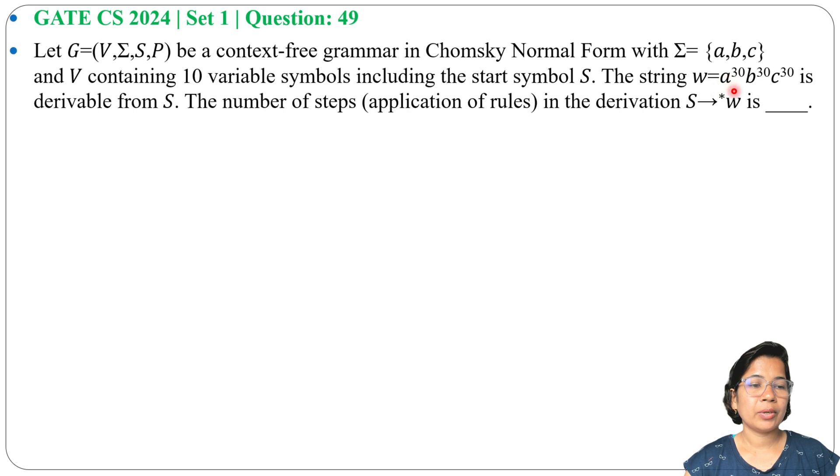The string w = a^30 b^30 c^30 is derivable from S. The number of steps (application of rules) in the derivation S → w is blank.